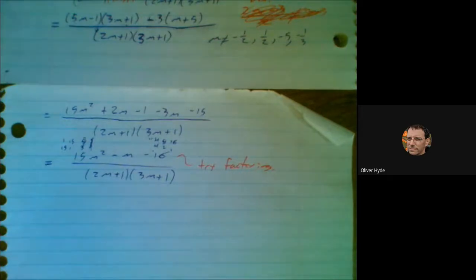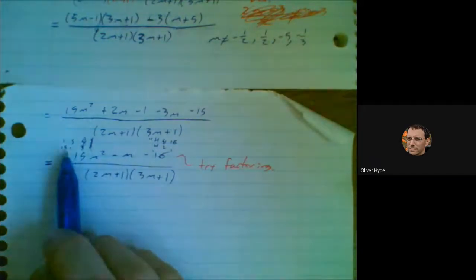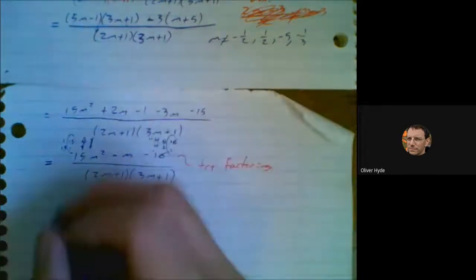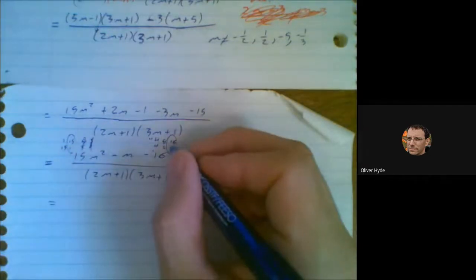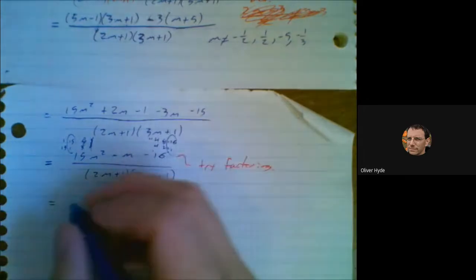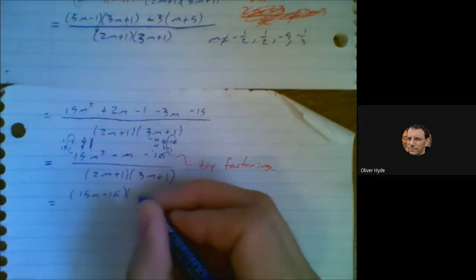I thought there was a factorization here. Maybe it was actually a mistake in my notes. Let me just check my notes here. Oh, yeah. It's one that I haven't checked yet, I guess. Yeah, it's the 15 and the 16. There it is. 15 and 16. Unlucky that it's the larger numbers on the outside. Minus 16 plus 15. So we do 15m minus 16 multiplied by m plus 1.